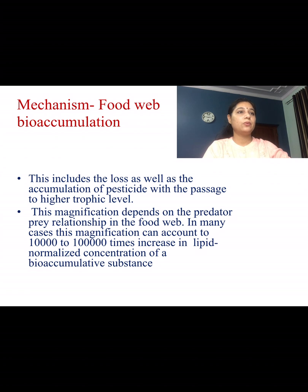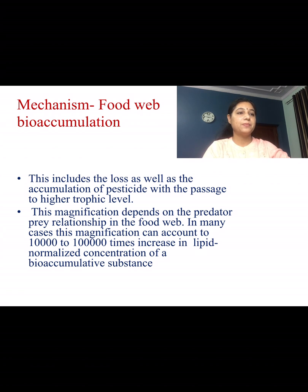Food web bioaccumulation includes both the loss and accumulation of pesticide with passage to higher trophic levels. This magnification depends on the predator-prey relationship in the food web. In many cases, this magnification can account for 10,000 to 100,000 times increase in the lipid-normalized concentration of a bioaccumulative substance.